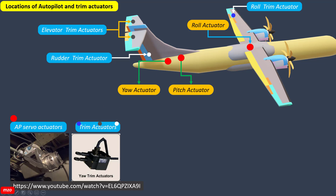This is the AutoPilot submodule. These three submodules are essentially the same, same part number. And this small black circuit is the elevator trim actuator. The white circuit is the rudder trim actuator.